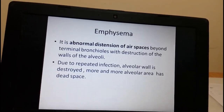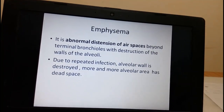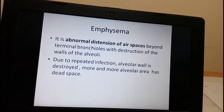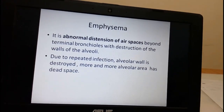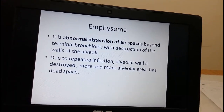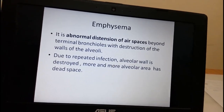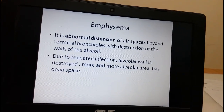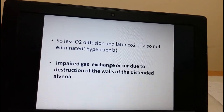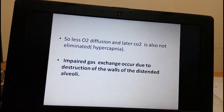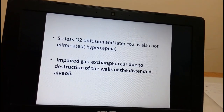The second entity is emphysema. In emphysema there is abnormal distension of air spaces beyond the terminal bronchioles with destruction of the alveolar walls. The elasticity of the alveoli gets lost, air becomes trapped inside and does not move outward. The alveolar area is no longer involved in gas exchange, creating more and more dead space. Impaired gas exchange occurs due to destruction of the walls of the distended alveoli, caused by repeated inflammatory processes.